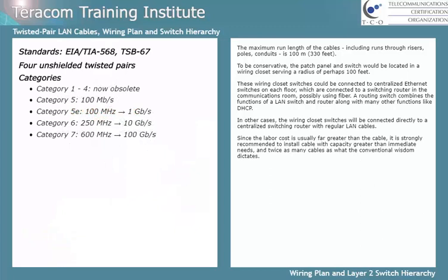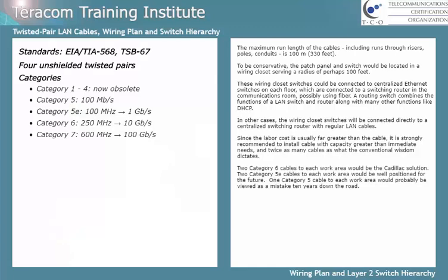Since the labor cost is usually far greater than the cable cost, it's strongly recommended to install cable with capacity greater than immediate needs and twice as many cables as conventional wisdom dictates. Two Category 6 cables to each work area would be the ideal solution. Two Category 5 cables to each work area would be well positioned for the future. One Category 5 cable to each work area would probably be viewed as a mistake 10 years down the road.